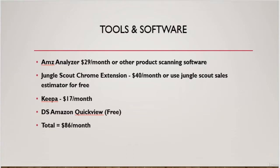Next is Keepa. Keepa is $17 a month and is an absolute necessity. Keepa lets you look at a product's sales rank history and price history, which is absolutely critical in determining potential profitable products.